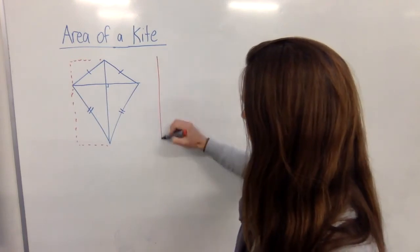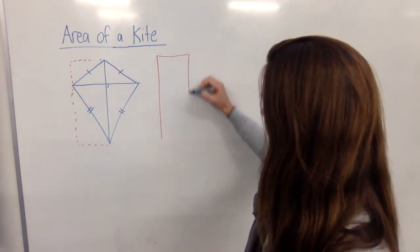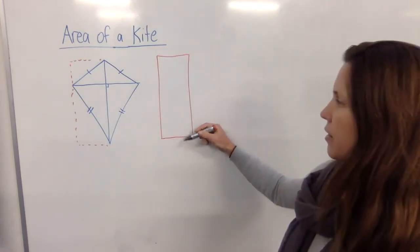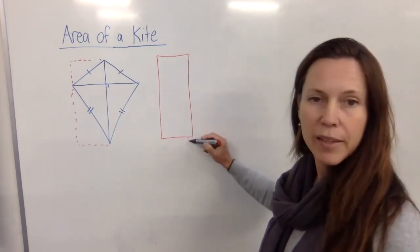So it's basically the same as finding the area of a rectangle. So we know that the area of a rectangle is one side multiplied by the other.